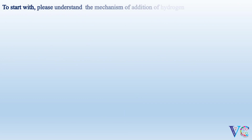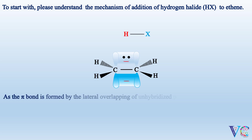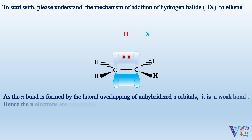To start with, please understand the mechanism of addition of hydrogen halide to ethene. As the pi bond is formed by the lateral overlapping of unhybridized p orbitals, it is a weak bond. Hence the pi electrons are polarizable.